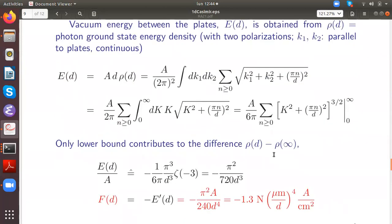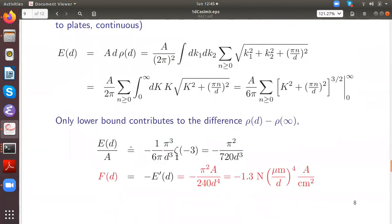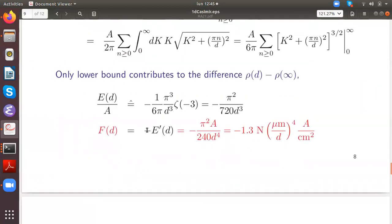Now we subtract against the counter term rho infinite, so the density that we have without these plates. And then we see first of all that the upper bound here does not contribute to this difference. So the contribution is only from the lower bound, and then we obtain a sum over n to the three. So this is the last example that I gave from Ramanujan summation. If we replace it by zeta of minus three, one over 120, we obtain this value. And then we can readily derive the force by taking the derivative of the energy density. And here I convert it back into physical units. This is Newton.